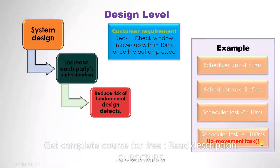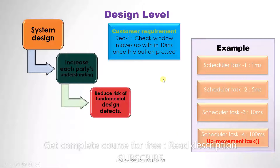Now here we have a scheduler task of 100 milliseconds, and as you can see the developer has put the up-movement task — which causes the window to move up — in here. But our customer requirement asked for the window to move up within 10 milliseconds. So the function needs to be in one of the first three scheduler tasks. As the design stands, the window will move in 100 milliseconds, not 10 milliseconds. The function needs to be placed in the 1ms, 5ms, or 10ms scheduler task. It is only by performing a review of this design that we can spot this mistake.